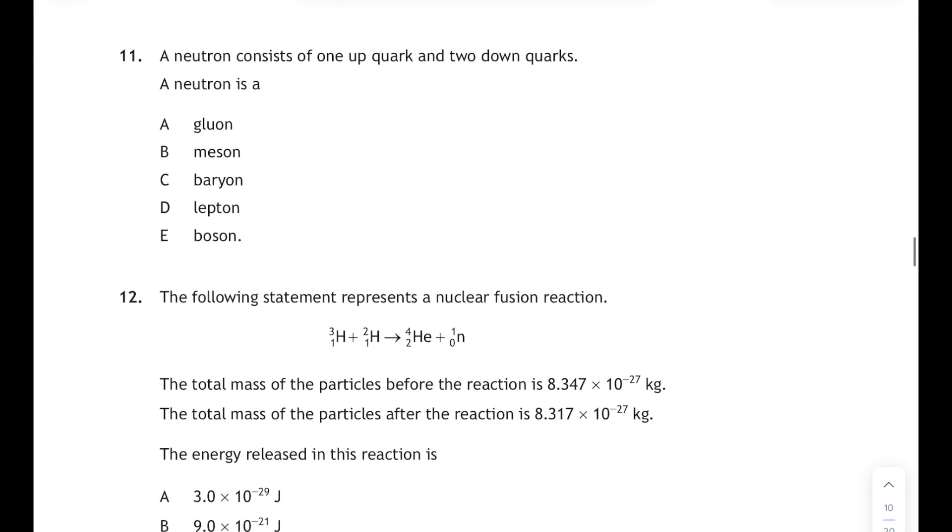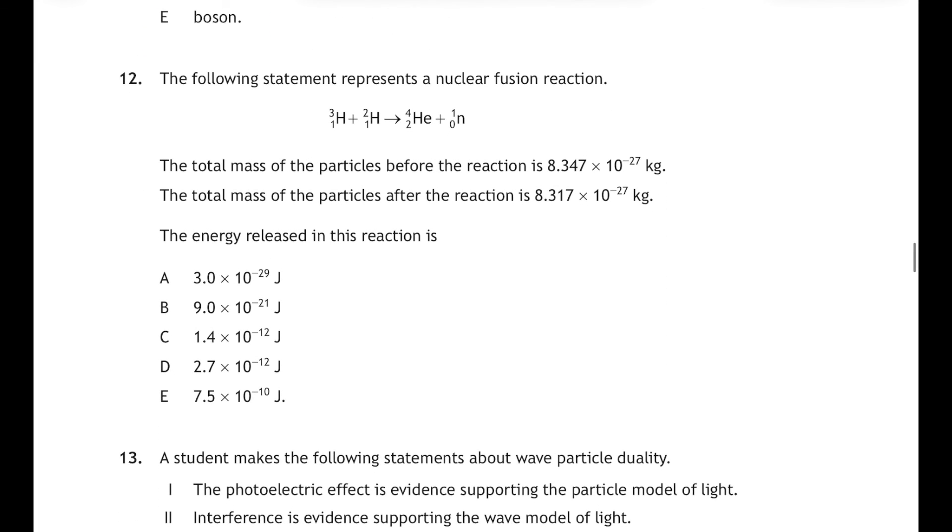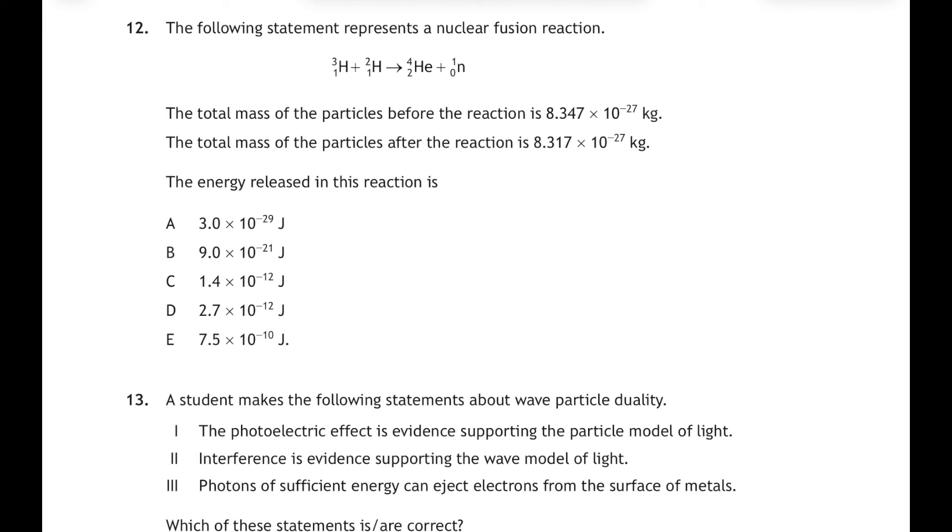Question 11. A neutron consists of one up quark and two down quarks, so a neutron is... well a composite particle made of three quarks is a baryon, 11C. Question 12, following statement represents a nuclear fusion reaction and we've got two hydrogen nuclei fusing into a helium nucleus plus a neutron. And we're told the total mass before the reaction and the total mass after the reaction. And the total mass after the reaction is less than the total mass before, so we want to find the difference between those two and pop it into the equation E equals mc squared where m is the lost mass and c is the speed of light. So let's work out the lost mass first. So it'll be 8.347...